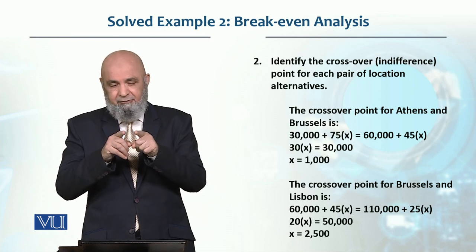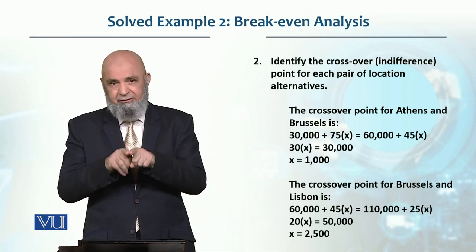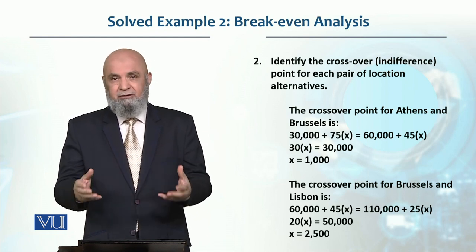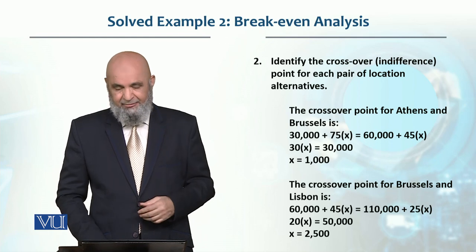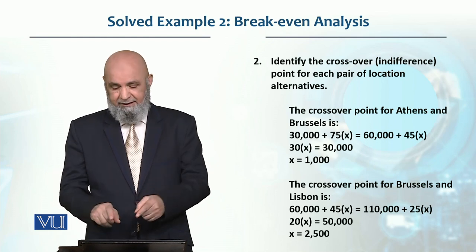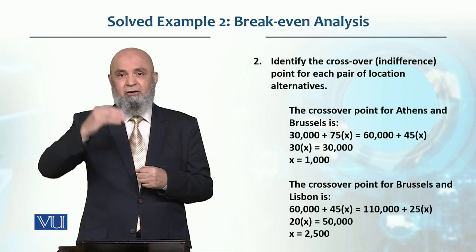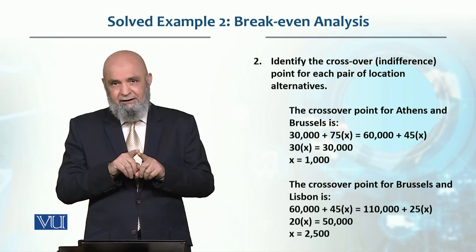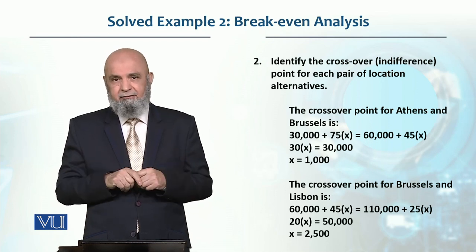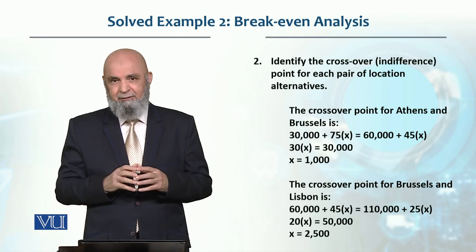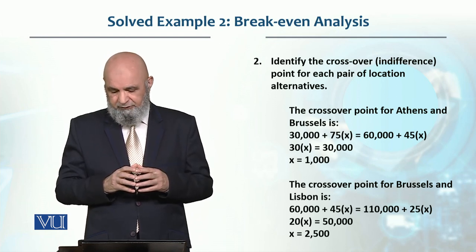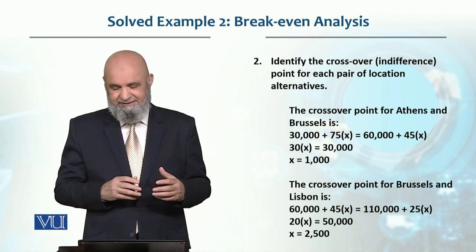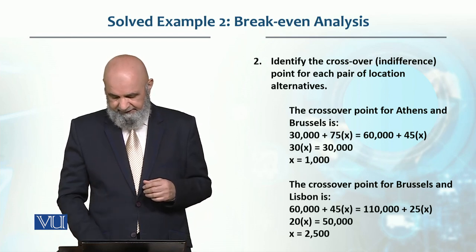At the quantity of 25,000, it doesn't matter whether Brussels or Lisbon — both countries give equal cost. We did not calculate the third crossover point, between Athens and Lisbon, because that cost falls above the Brussels cost line — meaning some other location always has a lower cost. So we only calculated the two relevant crossover points and skipped the Athens-Lisbon one.